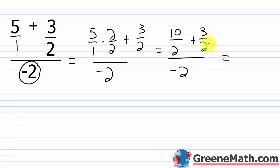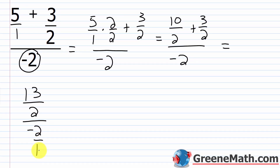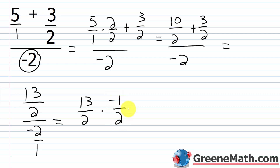Continuing, in the numerator of the complex fraction I now have a common denominator of 2, so I add the numerators: 10 plus 3 is 13, giving 13/2. This is divided by negative 2, which I'll write as negative 2/1 to make it easier. So the division problem is 13/2 divided by negative 2/1. The fraction 13/2 stays unchanged, and I multiply by the reciprocal of negative 2/1, which is negative 1/2. Nothing to cross-cancel, so: 13 times negative 1 is negative 13, and 2 times 2 is 4 — giving negative 13/4 as the answer.